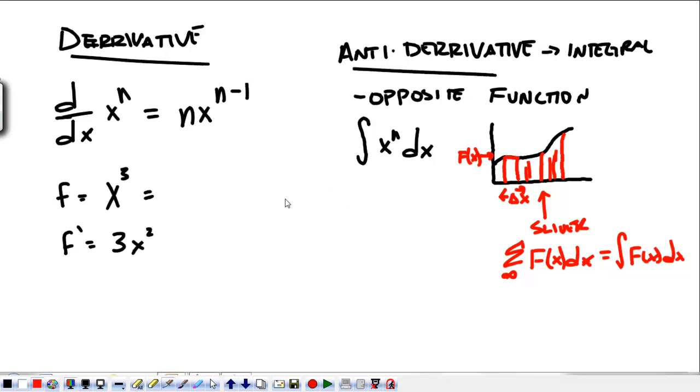So, as far as being the opposite function goes, the integral of x to the n dx is going to be x to the n plus 1 over n plus 1. Let me explain. When we took the derivative, we brought down the exponent and made it smaller. Here, we're going to have to make it bigger, and instead of multiplying by the exponent, we're going to have to divide by it.